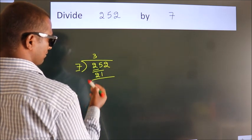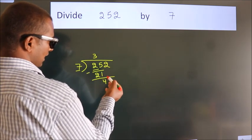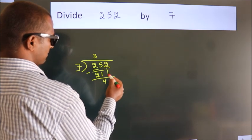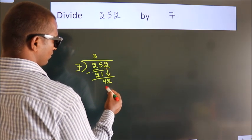Now we should subtract. We get 4. After this, bring down the beside number. So 2 down, so 42.